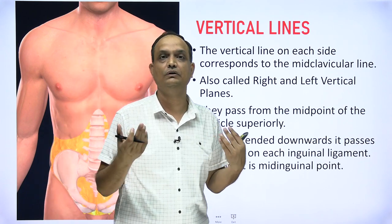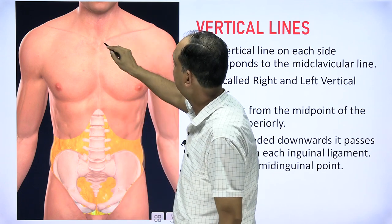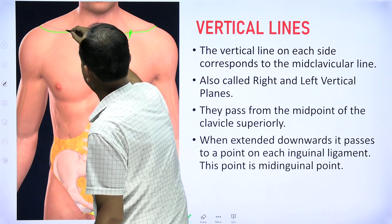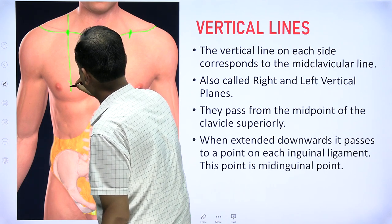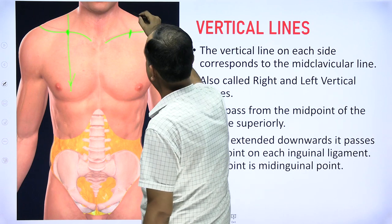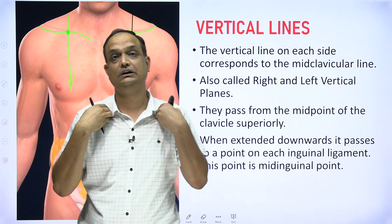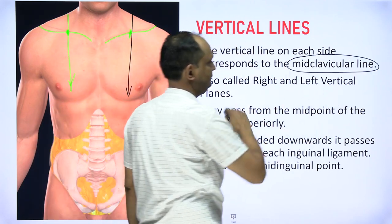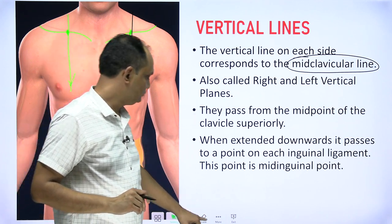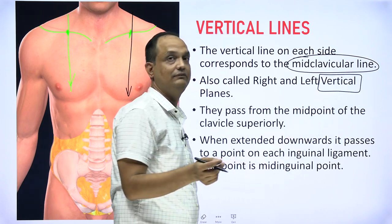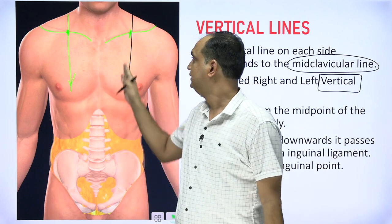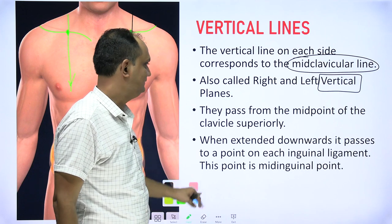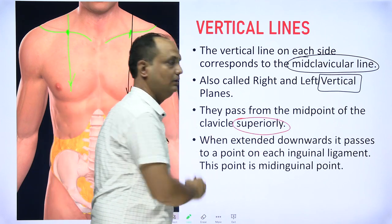The two vertical lines each correspond to the mid-clavicular line. You find the center point of the clavicle and draw a line vertically downward — this is the mid-clavicular line. These vertical lines are also termed the right and left vertical planes. They pass from the midpoint of the clavicle superiorly down toward the inguinal region.